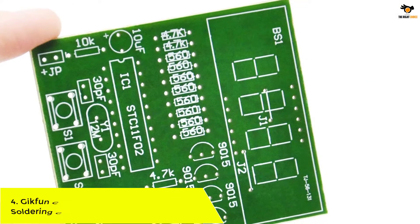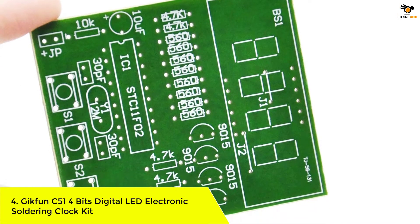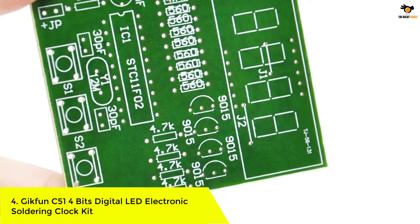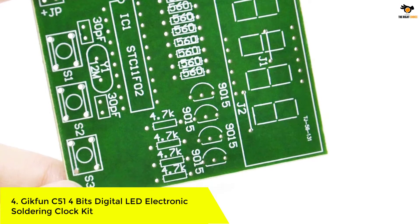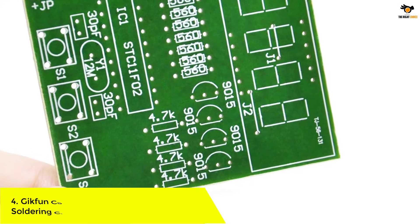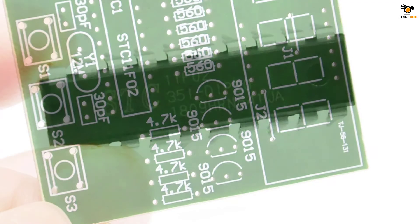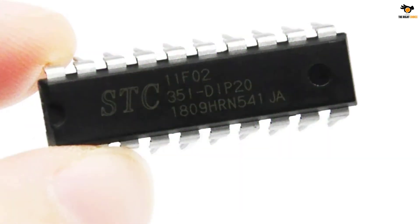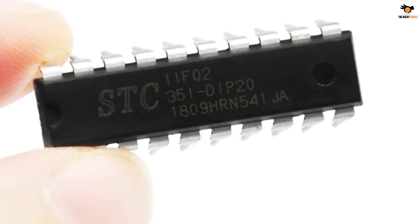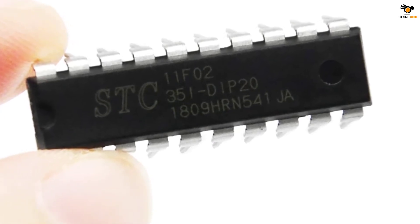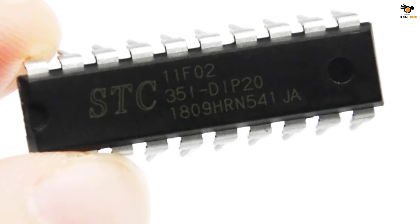Number 4: Geekfun C51 4-Bits Digital LED Electronic Soldering Clock Kit. While most of the DIY kits in the list come with USB power or a button battery option, the Geekfun C51 comes with a conventional AA battery-sized design. It has a 4-bit digital LED display and is an easy-to-assemble, simple soldering clock kit.